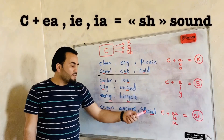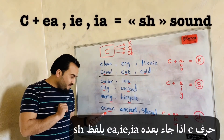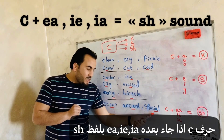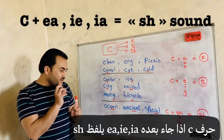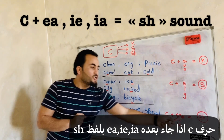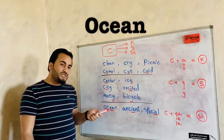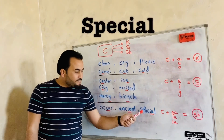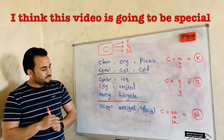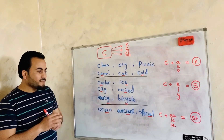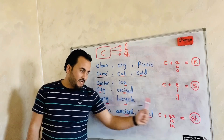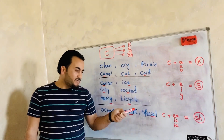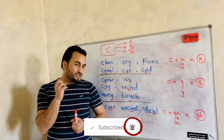Here, in these three words, C before E-A, I-E, or I-A, the sound of C is going to be SH. Ocean. Ancient. Special. I think this video is going to be very special. So here, C plus EA like ocean, IE like ancient, IA like special — the sound is SH.